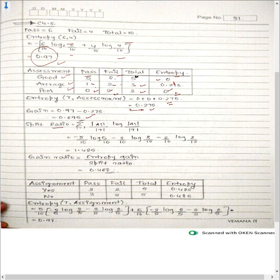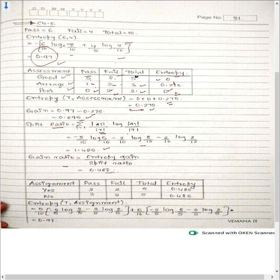The split ratio formula is: minus sum of (a_i / t) × log(a_i / t) for i = 1 to n, where t is the total number of instances and a_i is the count of each attribute value. For assessment: minus(5/10)log(5/10) minus(3/10)log(3/10) minus(2/10)log(2/10). This gives the split ratio. The gain ratio equals information gain divided by split ratio, which gives 0.0468 for assessment.